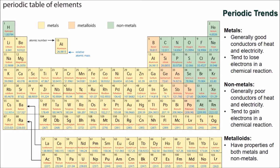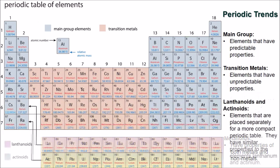Elements fit into three broad categories: metals, metalloids, and non-metals. Generally, metals are good conductors of heat and electricity. They will tend to lose electrons during a chemical reaction. Non-metals are poor electrical and thermal conductors, and gain electrons during a chemical reaction. The metalloids have properties of both metals and non-metals.